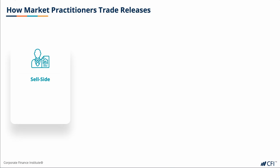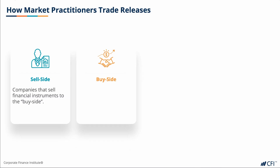First of all, sell side. These are companies or entities that sell financial instruments to the buy side. Generally, these are the investment banks of the world — you may have heard of names like JP Morgan, Goldman Sachs, and Deutsche Bank. The next category would be buy side clients, generally institutions that invest in the financial instruments offered by the sell side. Most commonly, these would be asset managers, pension funds, central banks, even private banks that operate on behalf of individuals. Buy side clients are the ones that invest money on behalf of other people.